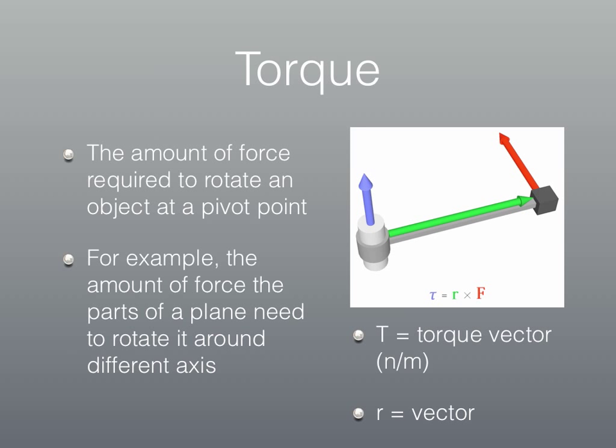This is all embodied in the formula T equals R times F, where T is the torque vector, or the stiffness of the screw, R is the radius between the pivot point and the force, and F is the force you're applying. As you can see, the more force you apply, the less radius is required between the pivot point and the force being applied.